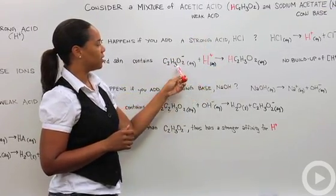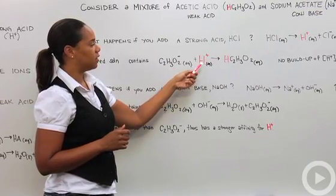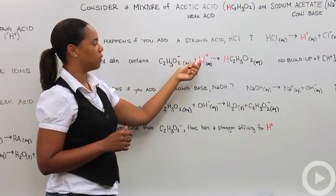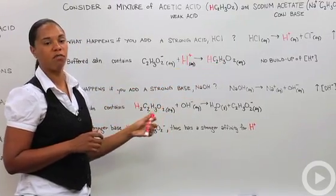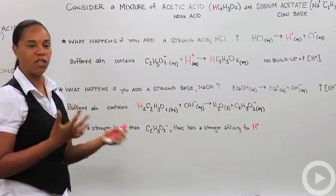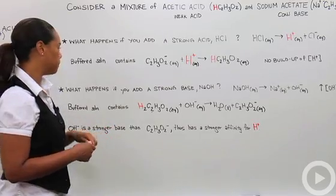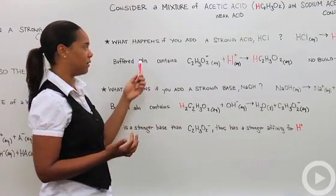Therefore, basically this acetate ion comes and kind of captures the protons that we put in. So there's no appreciable buildup of the concentration of protons, and therefore we don't have an appreciable change in our pH. It doesn't become more acidic in this case.